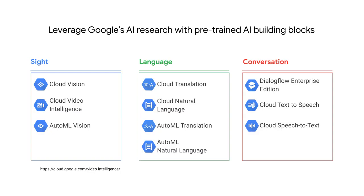A common theme throughout this course is that when Google makes breakthroughs in AI research, it continues to invest in new ways to expose these as fully trained models for everyone. You can therefore leverage Google's AI research with pre-trained AI building blocks. For example, if you're a company producing movie trailers and quickly want to detect labels and objects in thousands of these movie trailers to build a movie recommendation system, you could use a Cloud Video Intelligence API instead of building and training your own custom model. There are other fully trained models for language and for conversation too.